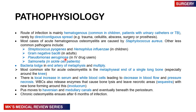The bacteria lodge in the end arteries of the metaphysis and begin to multiply. This is the most common site — the metaphyseal end of a long bone, especially around the knee. Once this happens, there is an influx of serum and white blood cells, leading to decreased blood flow and pressure necrosis. The white blood cells release enzymes that digest the bone, resulting in bone lysis and leaving behind necrotic areas called bone sequestra.